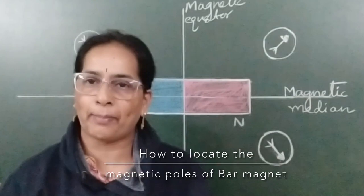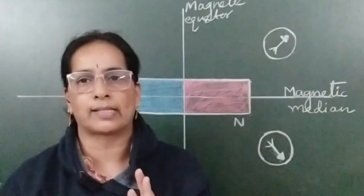Magnetic pole is always located a bit inside the geometric poles. To find the location of magnetic poles, there is a procedure.